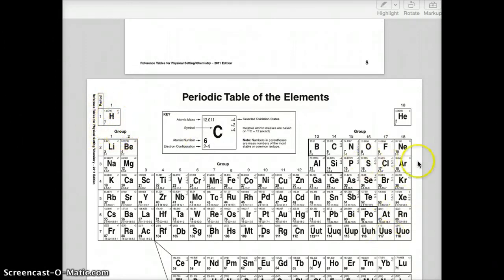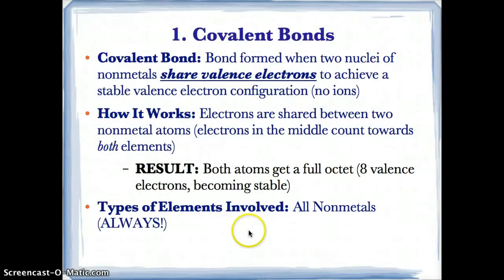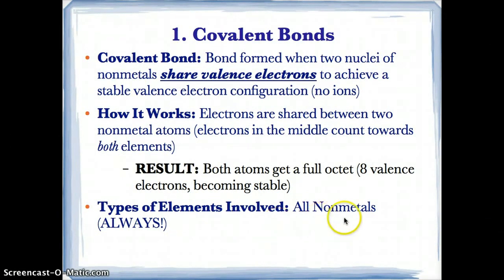All other nonmetals are to the right of the bold steps on the periodic table. So remember: covalent bonds involve all nonmetals only, and nonmetals are usually to the right of the bold steps on the periodic table, except for H, which is the only exception.